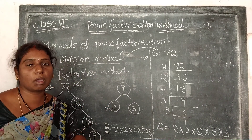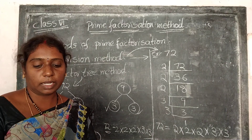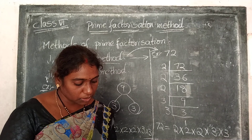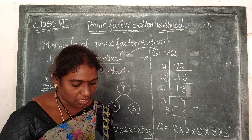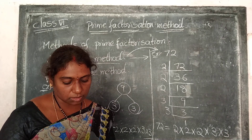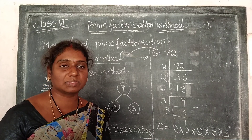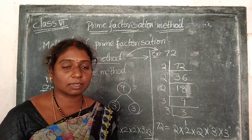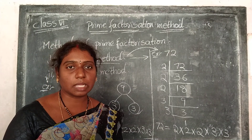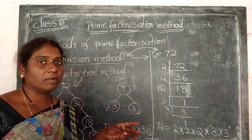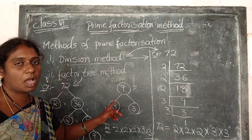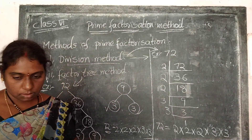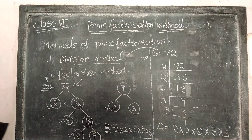This is the topic: prime factorization method with two methods — division method and factor tree method. Take your examples and practice. There is a 'Do This' exercise on page number 36: write the prime factors of 28 and 36 using the division method, and write the prime factors of 42 using the factor tree method. Complete the 'Do This' exercise. Thank you.